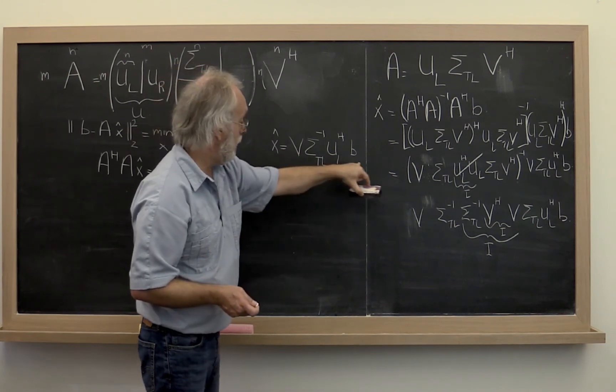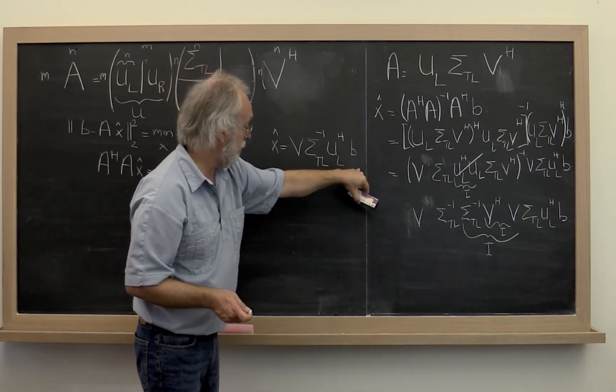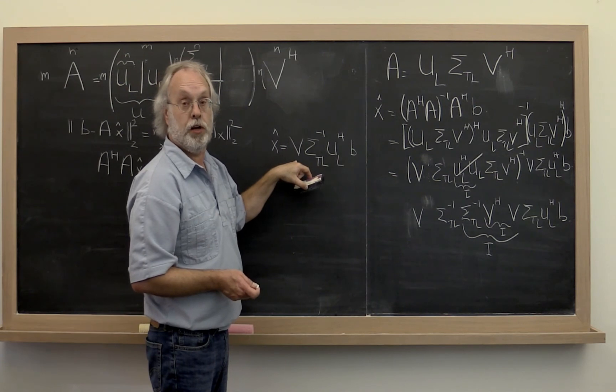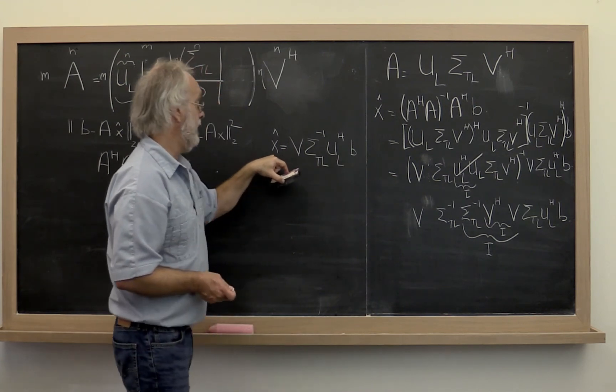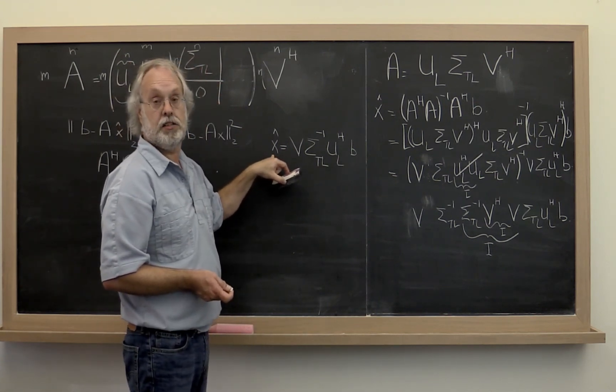And then you end up with a vector. And you use that vector to take a linear combination of the columns of V. And that is your desired linear least-square solution.